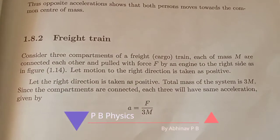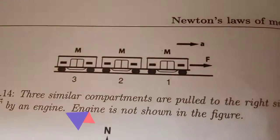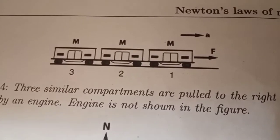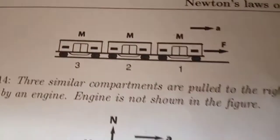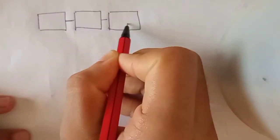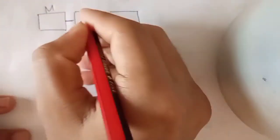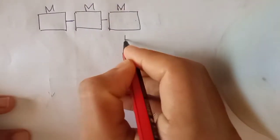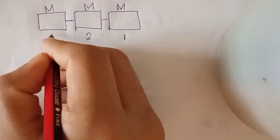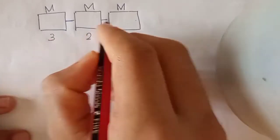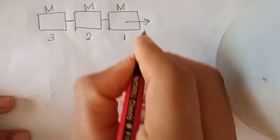In physics, there is a train — a goods train or cargo train — which is connected to three compartments. There is a force applied, and we have the first compartment, second compartment, and third compartment.